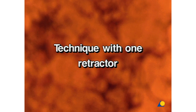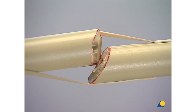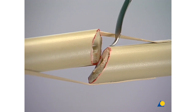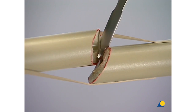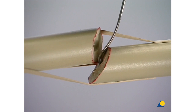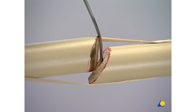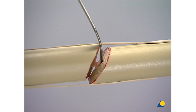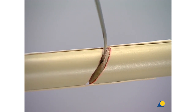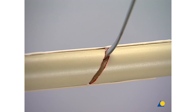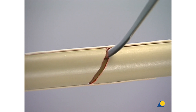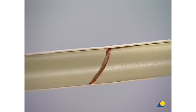Technique with One Retractor. The tip of the eight millimeter retractor is moved along one of the main fragments towards the fracture and inserted into the fracture site. The retractor is then turned 180 degrees so that its tip is inserted into the medullary cavity. The desired extension and subsequent reduction are then achieved by tilting the retractor.